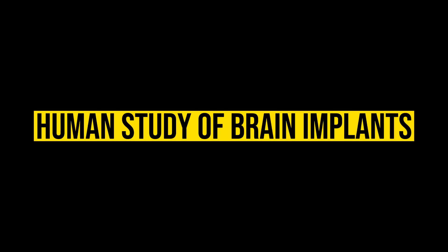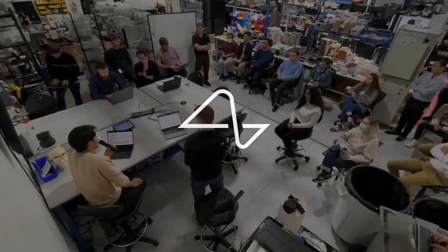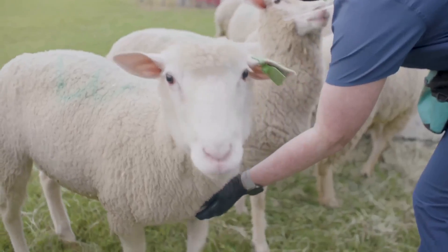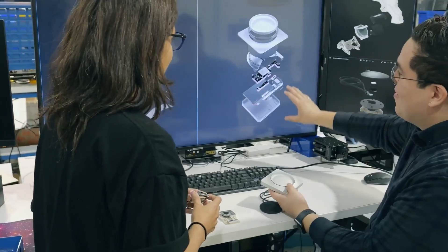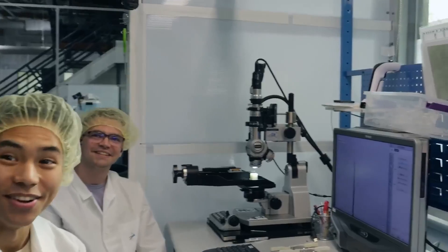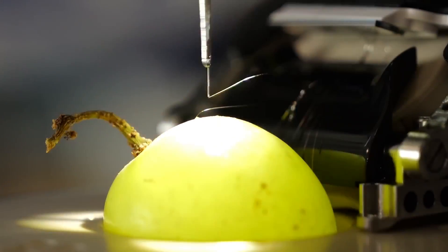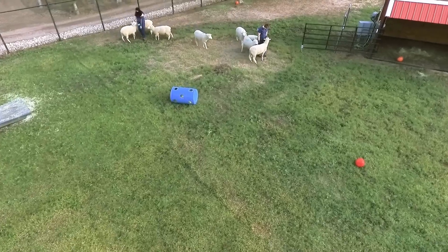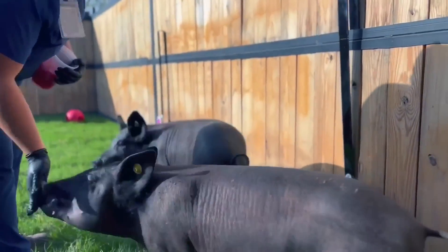Human Study of Brain Implants: Elon Musk's Neuralink received U.S. Food and Drug Administration (FDA) clearance for its first in-human clinical trial, a critical milestone for the brain implant startup as it faces U.S. probes over its handling of animal experiments.